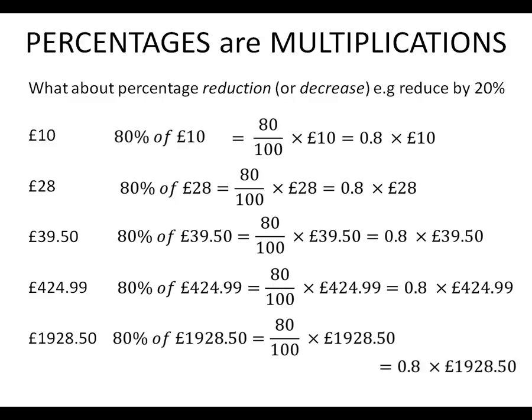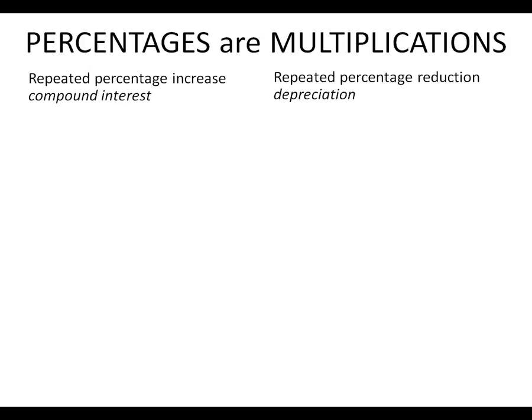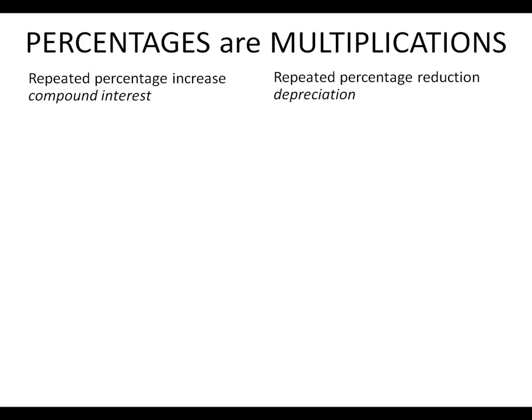This method really comes into its own when you carry out percentage increases or decreases many times. One of the most common such calculations is compound interest — what banks calculate daily to determine how much you owe or are owed. Repeated percentage increase crops up in compound interest; repeated percentage reduction crops up in depreciation, which is when an object like a car or computer falls in value over time.